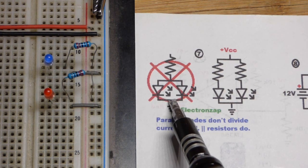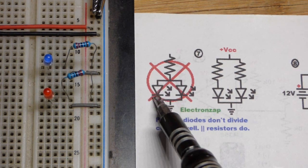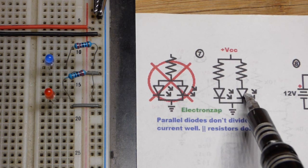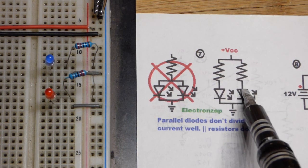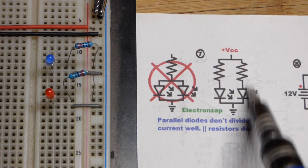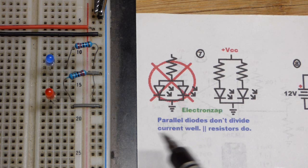So now we're going to talk about parallel LEDs. You don't want to parallel LEDs with each other. You want to give each parallel LED a resistor. So ultimately we have parallel resistors with LEDs instead of just two parallel LEDs.